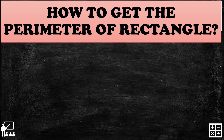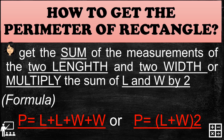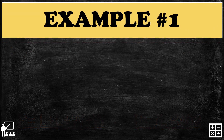To get the perimeter of a rectangle, get the sum of the measurements of the two lengths and two widths, or multiply the sum of length and width by 2. We can use the formula: P = L + L + W + W, or P = (L + W) × 2.